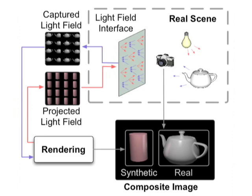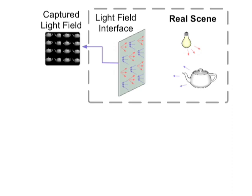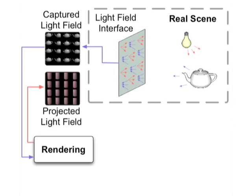We now describe in detail the process of rendering images using our light field transfer method. First, direct lighting in the real scene illuminates real objects. A light field of the real objects lit with direct illumination is captured by the light field interface. The renderer lights synthetic objects with direct lighting that is calibrated to the real scene, then generates a light field to be sent onto the light field interface for projection.